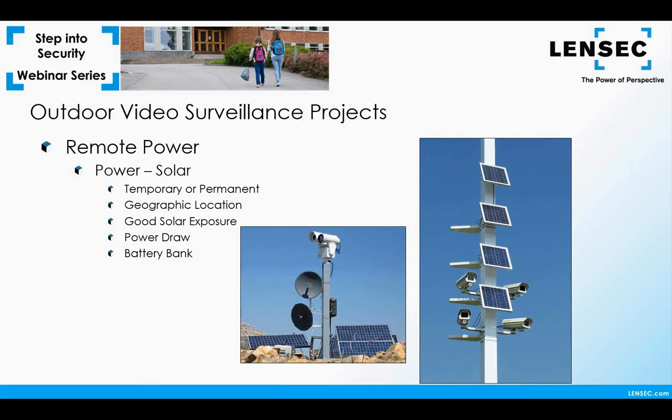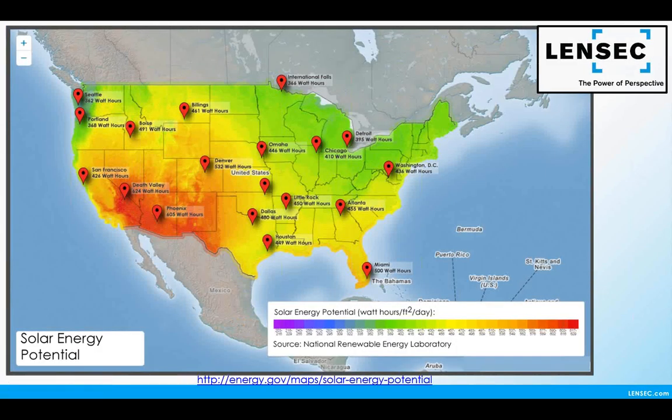Angle is also important — your tilt, as a general rule of thumb, should be equal to your latitude plus 15 degrees in the winter or minus 15 degrees in the summer. Geographic location matters: you can expect more sun in Southern California than in Washington, but that doesn't mean you cannot use solar in less sunny areas — you may just need to adjust your solar panel array or battery bank. The U.S. Department of Energy link provided gives data on solar energy potential for various areas around the United States — Death Valley gets significantly more watt hours than Seattle does.